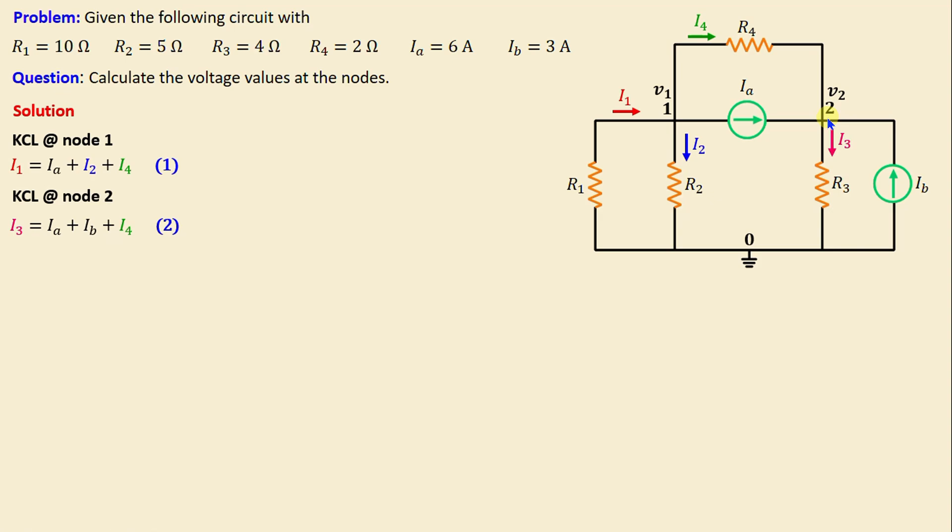According to Ohm's law, the current can be expressed as the voltage difference across a resistor divided by the resistance. This implies that the currents can be determined by the following equations: I1 = (0 - V1)/R1, I2 = (V1 - 0)/R2, I4 = (V1 - V2)/R4, and I3 = (V2 - 0)/R3.